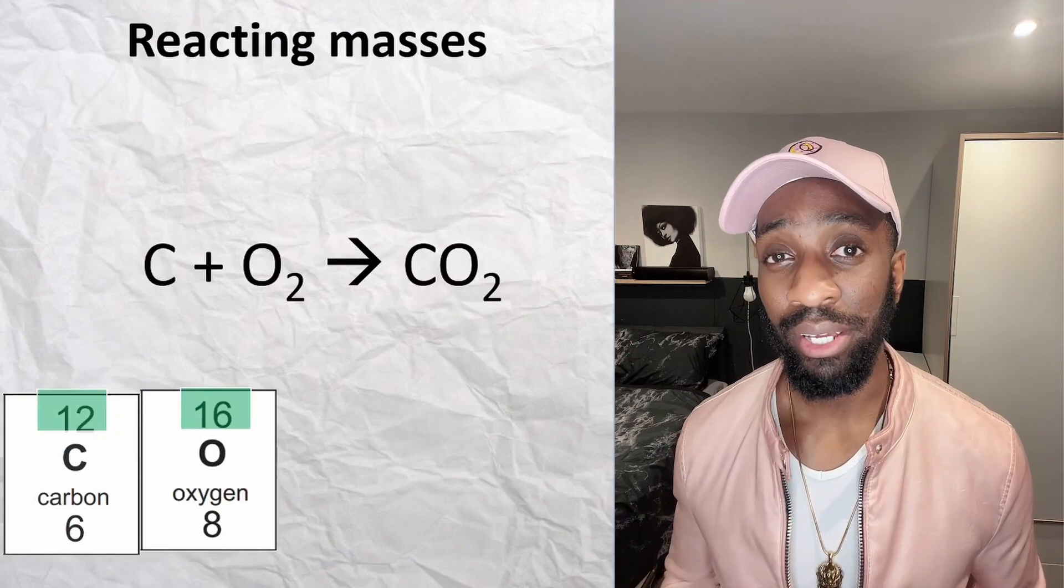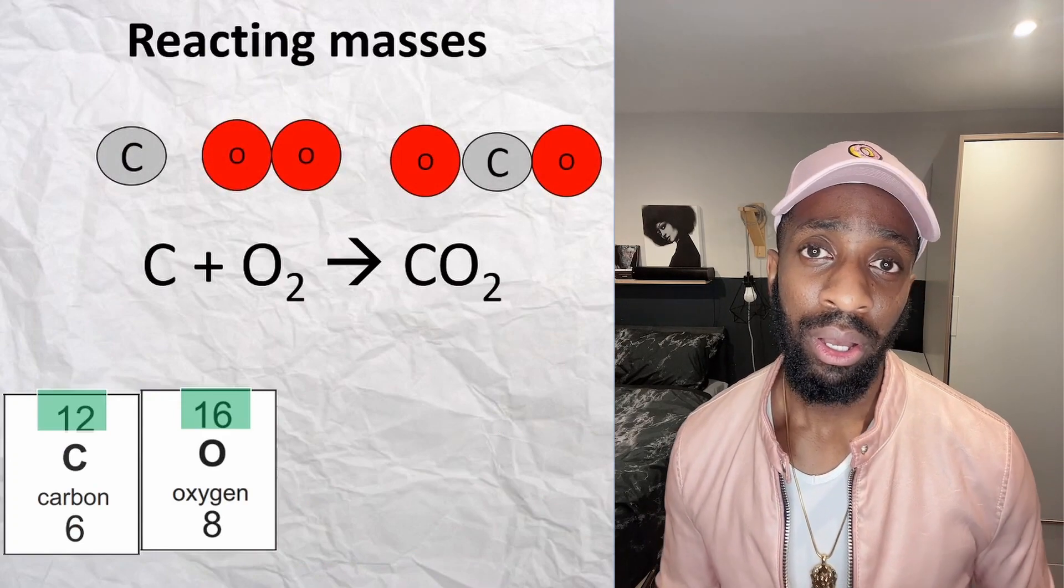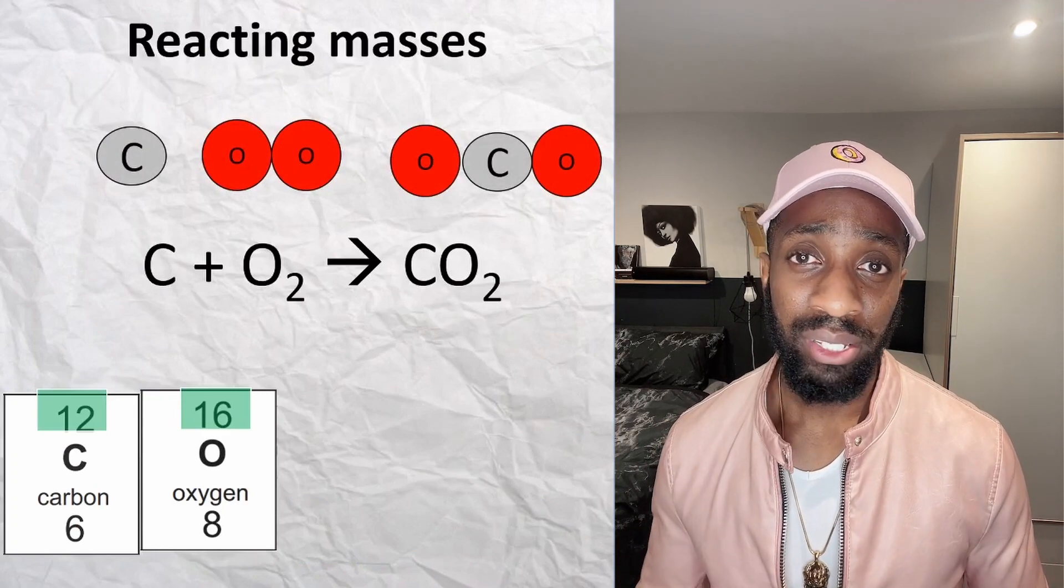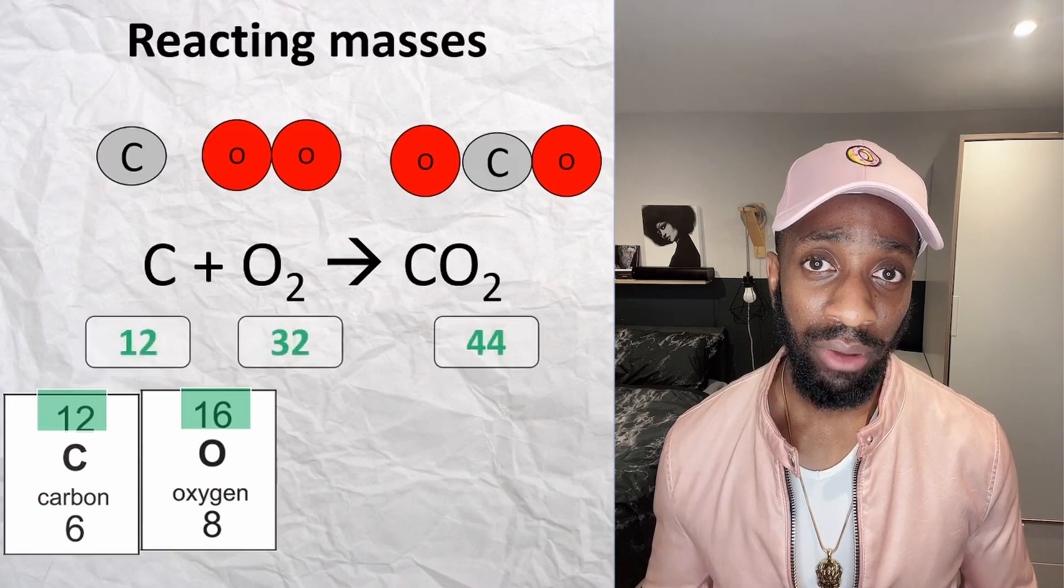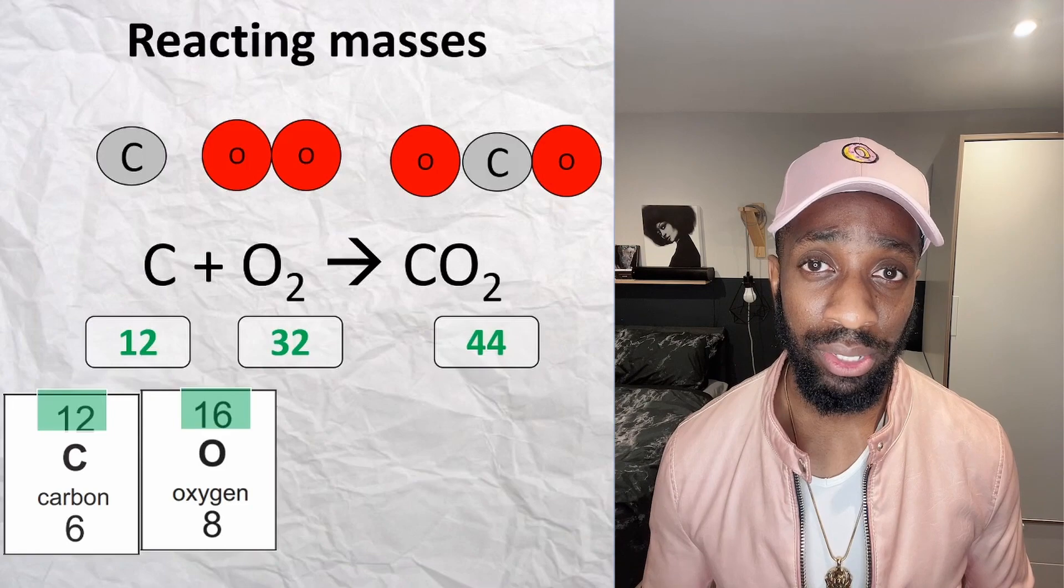Now let's see this calculation. We've got carbon reacting with oxygen to give us carbon dioxide. Writing the relative formula masses below, we've got 12 grams of carbon reacting with 32 grams of oxygen to produce 44 grams of carbon dioxide.